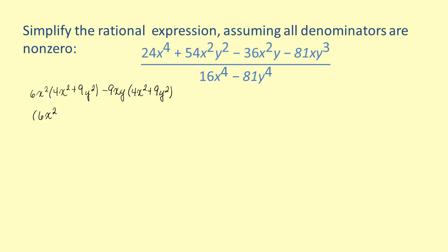The factor 6x squared minus 9xy can be further simplified by removing the common factor of 3x. The numerator is now in simplest form.